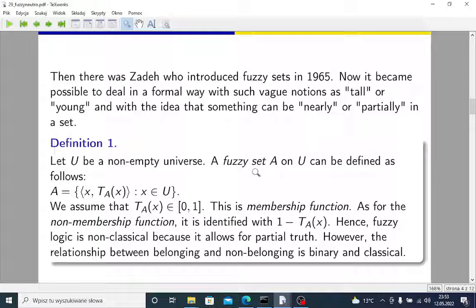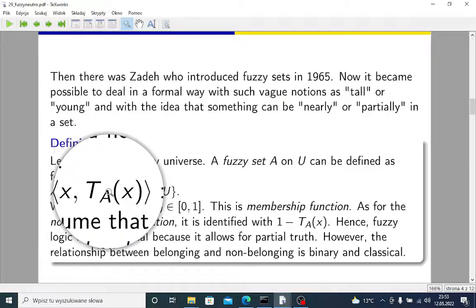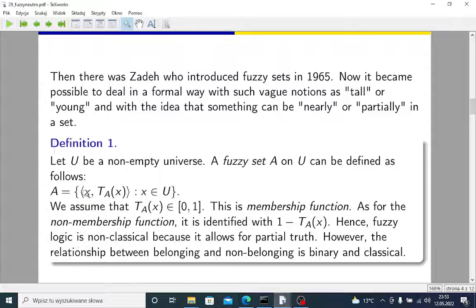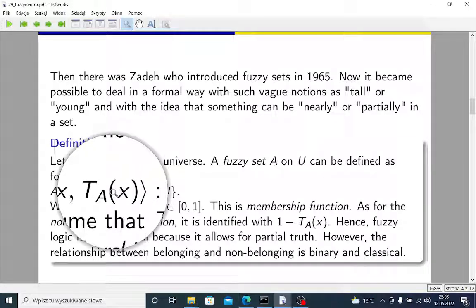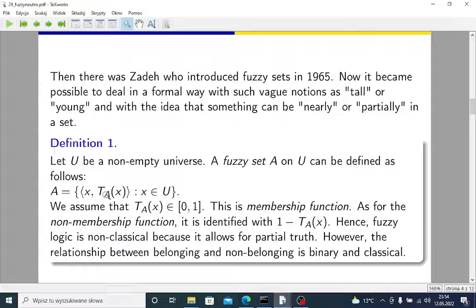So a fuzzy set A on U, on universe U, can be defined as follows: as a collection of ordered pairs, such that the first element of such pair is X, any element from the universe, and then we have membership function, the value of membership function when X is our argument. Any fuzzy set may be identified with its membership function. For example, we may define a fuzzy set of tall people. This is our point of view connected with the concept of being tall or being young.